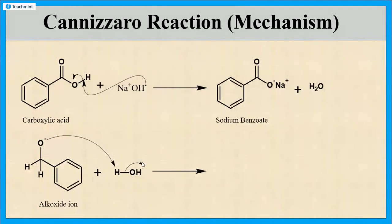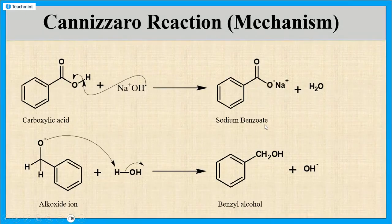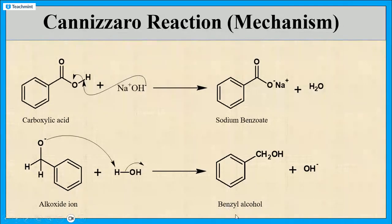So here we get the other product — benzyl alcohol, that is CH₂OH — with the elimination of the hydroxide ion. In the Cannizzaro reaction, when two molecules of benzaldehyde are heated with a base, one product is sodium benzoate, which is the oxidized product, and the reduced product is benzyl alcohol. This is the Cannizzaro reaction.